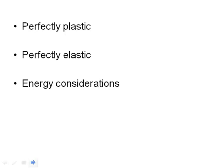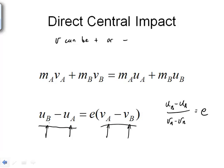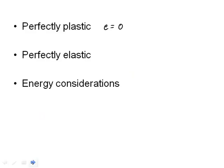In the case of a perfectly plastic collision, in this case, E is equal to zero. Now if we go back to the definition of E, if E is equal to zero, then U_B minus U_A is equal to zero. How can U_B minus U_A equal zero? Only if U_B equals U_A. So that means after the impact, particle B equals particle A in velocity. So that means the two particles are stuck together.